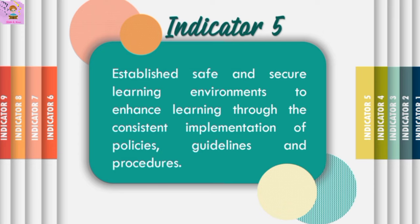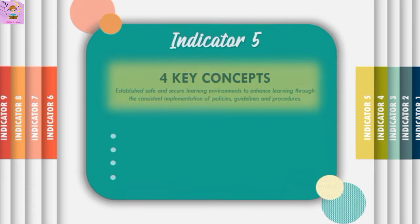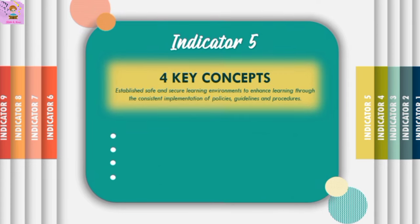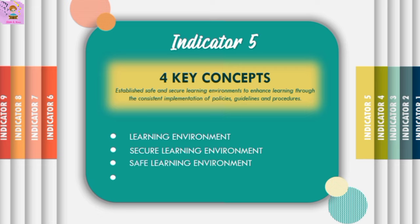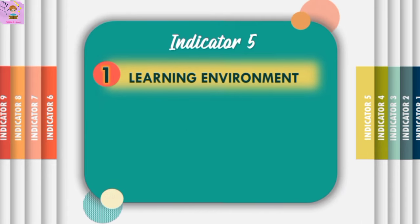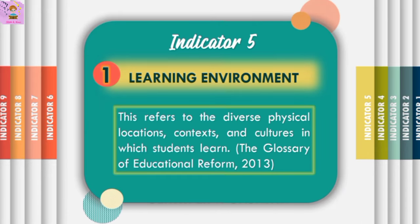Indicator 5 is establishing safe and secure learning environments to enhance learning through consistent implementation of policies, guidelines, and procedures. The four key concepts are learning environment, secure learning environment, safe learning environment, and consistent implementation. A learning environment refers to the diverse physical locations, contexts, and cultures in which students learn — encompassing the overall atmosphere, resources, and conditions that influence a student's learning experience. For example, a positive learning environment might include well-equipped classrooms, access to educational materials, and a culturally inclusive curriculum.